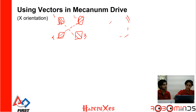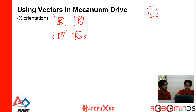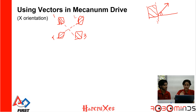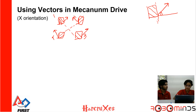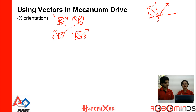In the X orientation, each Mecanum wheel's rollers are at 45 degrees from the vertical, so the force vector of each wheel makes a 45-degree angle with the horizontal. Setting up the vectors for wheels 1, 2, 3, and 4 in the X orientation, you can see that the resulting vector pattern is actually in an O shape. Conversely, for a Mecanum drive in the O orientation, the vectors form an X pattern.